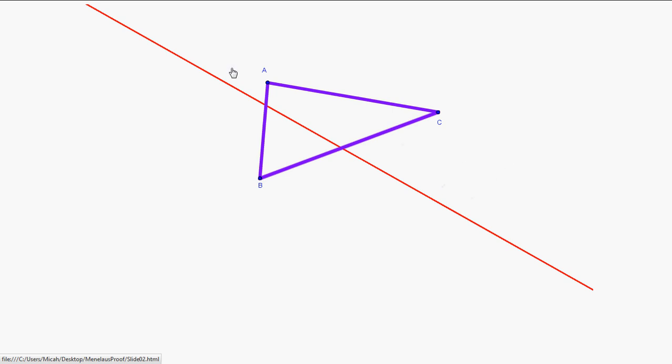So, to prove Menelaus' Theorem, we are going to relate those ratios of division to three other auxiliary segments: segments AD, EB, and CF. These segments are all perpendicular to the red line, and they pass through the vertices of our triangle.